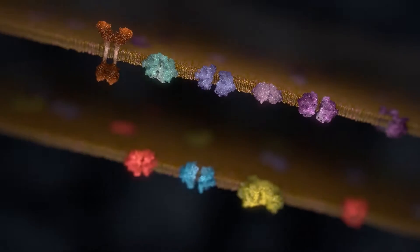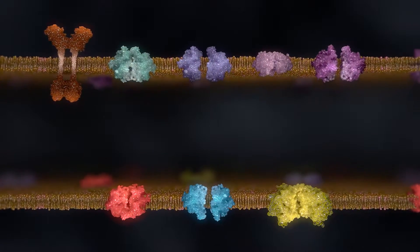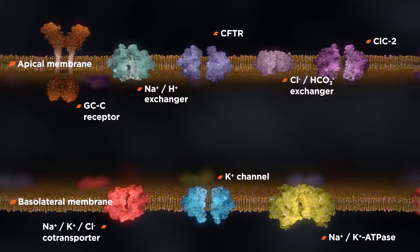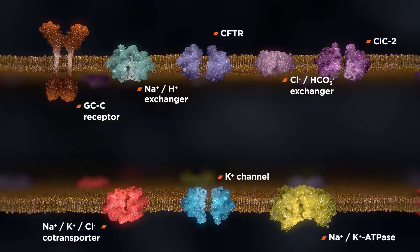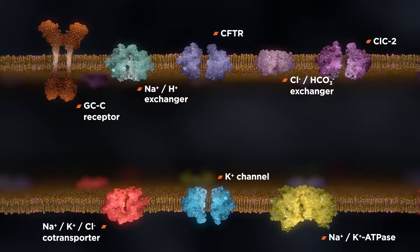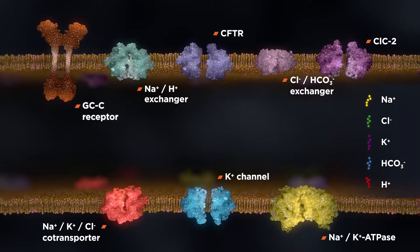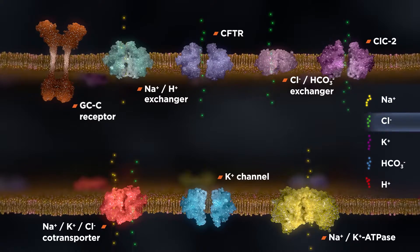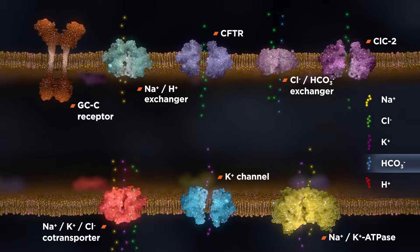At its core, this balance depends on ionic gradients across the apical and basolateral membranes of the intestinal epithelium. The ions and molecules that affect water balance and pH are sodium, chloride, potassium, and bicarbonate.